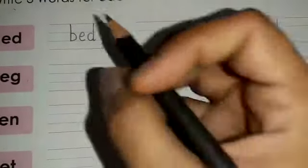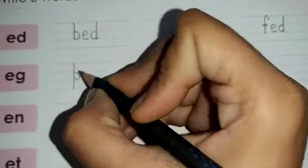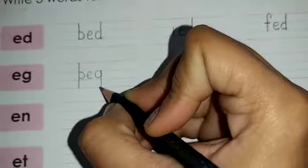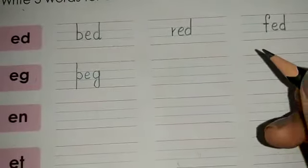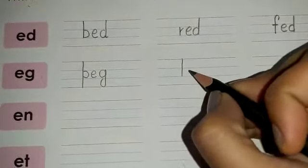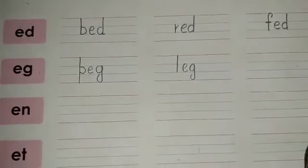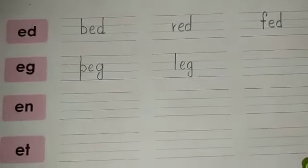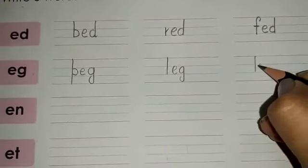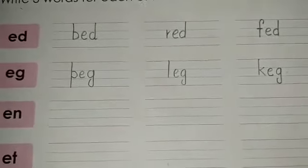The first word is peg, P-E-G, peg. The next word is leg, L-E-G, leg. And the third word is keg, K-E-G, keg.